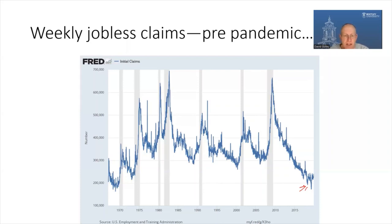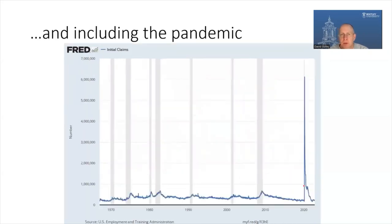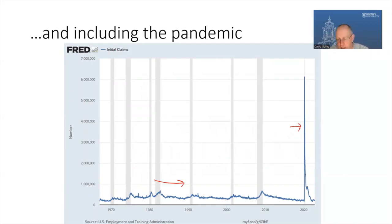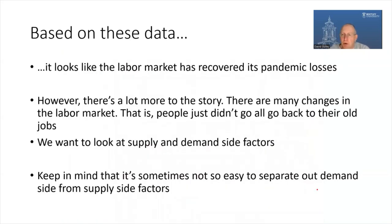Importantly, the number of unemployment claims is not adjusted for the size of the labor force, which has increased dramatically. So compared to the late 1960s, even though the level of claims is about the same, as a portion of the labor force they're much smaller. During the pandemic, claims skyrocketed and dwarf previous levels, making the pre-pandemic data look practically like a flat line. By late 2022, unemployment claims have reached very low levels, and by this measure the labor market has more or less recovered its pandemic losses — but there's much more going on in the background, as people didn't all go back to their old jobs.